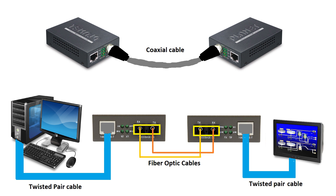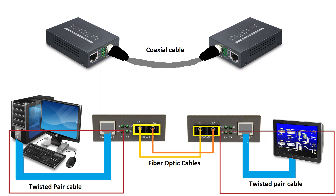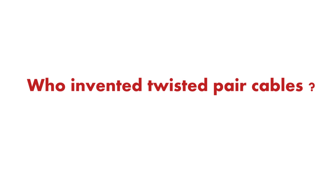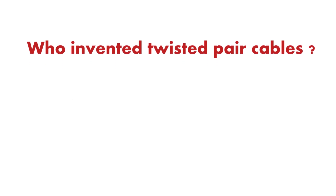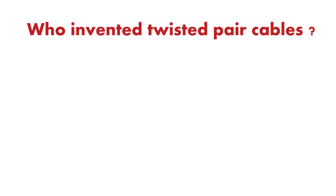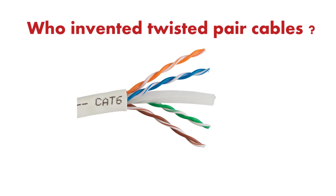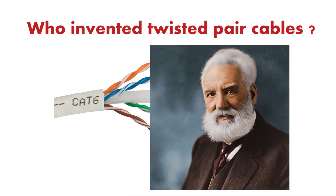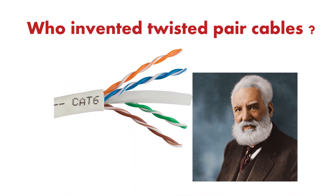Ethernet is a wide system. It started with using coaxial cable and has successfully progressed to now using twisted pair copper wiring and fiber optic wiring. Alexander Graham Bell invented twisted pair wiring in 1881.